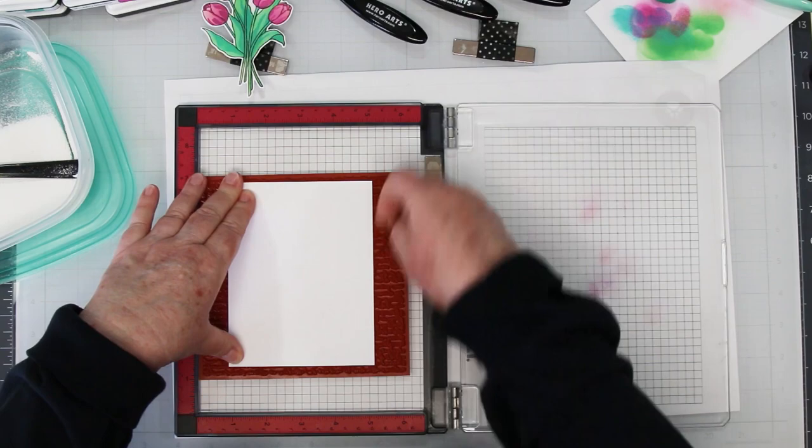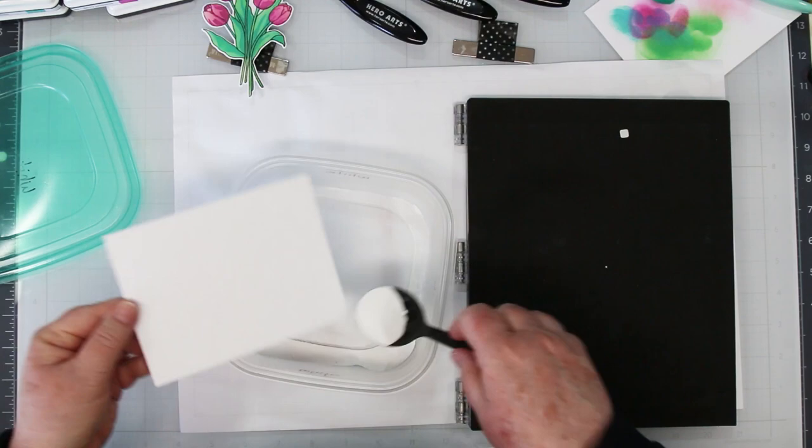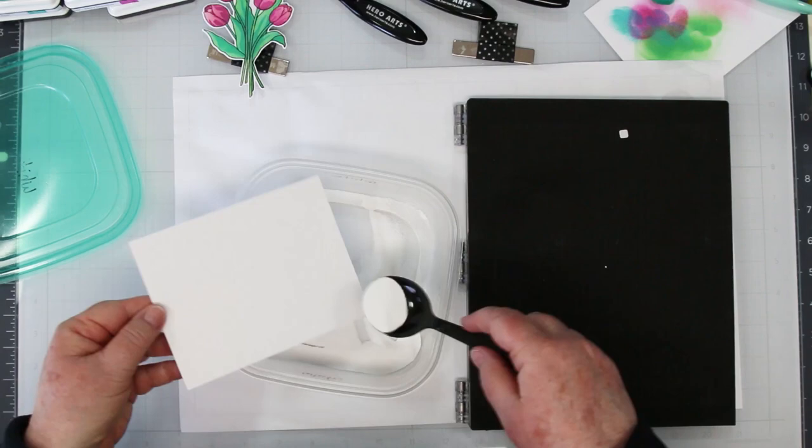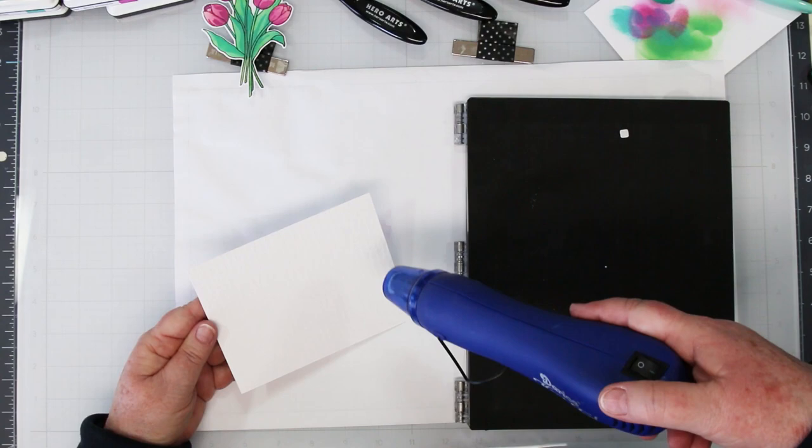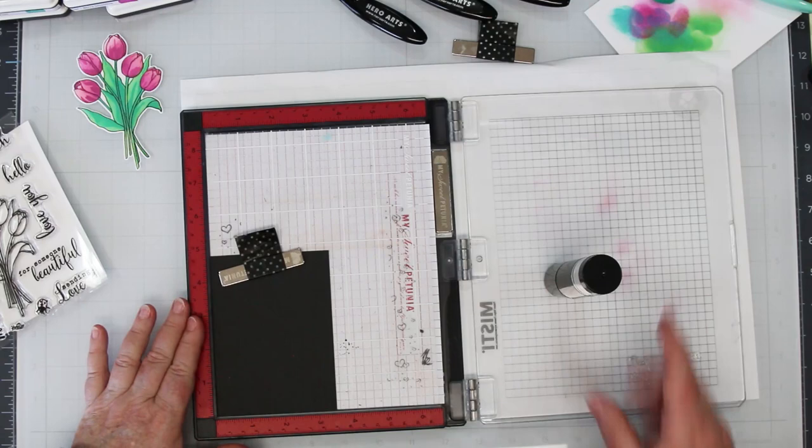I'm going to cover with white embossing powder and I'm going to heat set it. You could also do this step with clear embossing powder if you wanted to because we're on white paper so it's still going to show through as white.